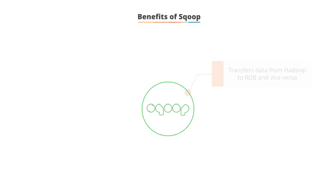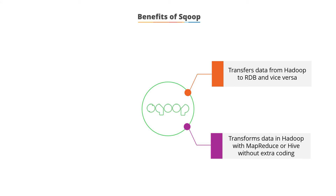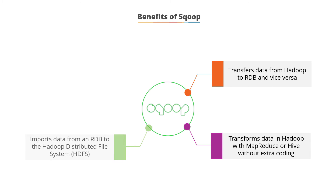Let's take a look at the benefits of Sqoop. It transfers data from Hadoop to an RDB and back again. It also transfers data in Hadoop with the help of MapReduce or Hive without writing any extra code. It is also used to import data from an RDB such as SQL, MySQL, or Oracle into the Hadoop Distributed File System, or HDFS. It can then export this processed data back into the original RDB or any other RDB.